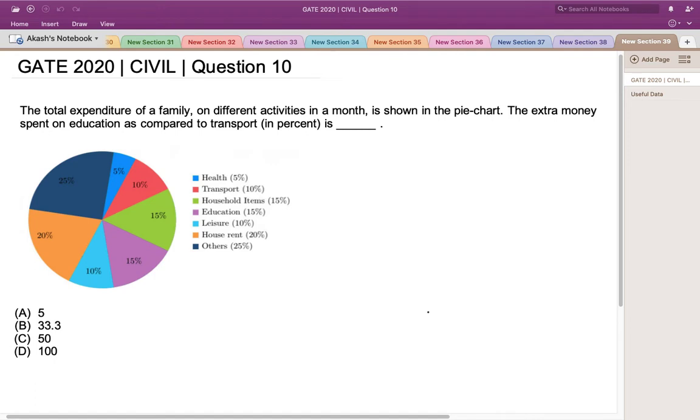So we have been given a pie chart with all the different expenditures or different activities of a family per month, and we have to determine the extra money that is spent on education as compared to transport. These are the two figures that we have to keep in mind.